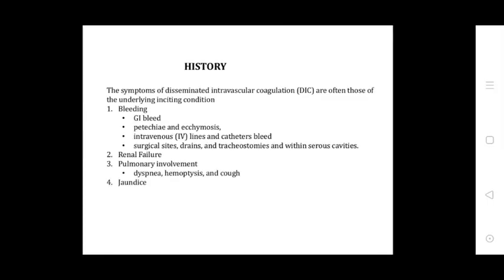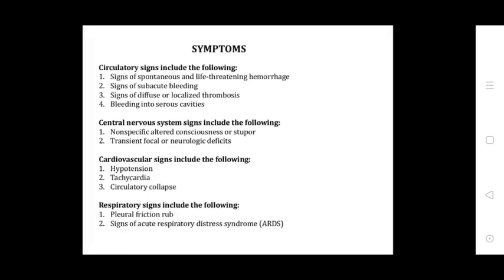Signs and symptoms of disseminated intravascular coagulation are often those of the underlying initiating conditions. Bleeding manifestations include gastrointestinal bleeding, petechiae and ecchymoses, intravascular line and catheter bleeding, surgical sites, drains, tracheostomies, and venipuncture sites. Renal failure and pulmonary involvement with dyspnea, hemoptysis, and cough and rhonchi.